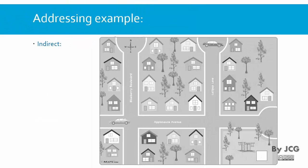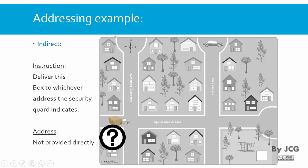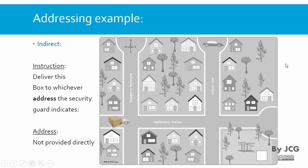Finally we have the indirect address. Indirect address is a different instruction — assume this neighborhood has a security guard. You can give an instruction like: deliver this box to whichever address the security guard will indicate to you. At the beginning you don't know to which address you're going to deliver the box. The address is not provided directly — you only know the neighborhood. The first step is to go to the security guard and ask where the package should be delivered. The guard tells you: this package is supposed to be delivered to Applesauce Avenue, house number 3. After that, the box is delivered to the appropriate house.